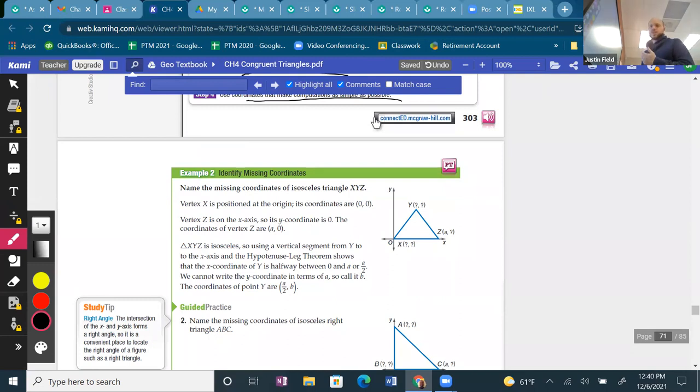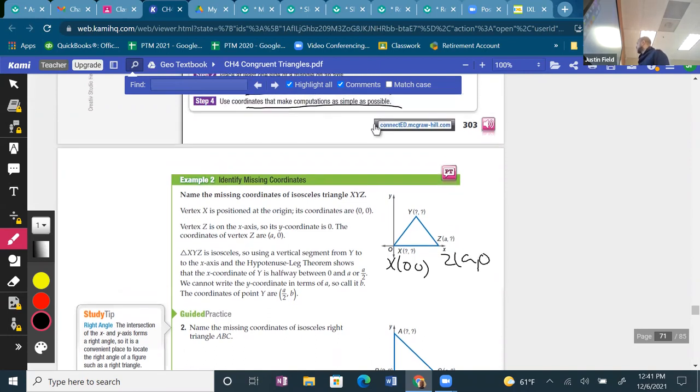Sometimes you may have missing coordinates. We can use relationships within the triangle. For example, if we have a midpoint or something else, then we can write an expression for a coordinate. X is (0,0), Z is on the axis, so that would be a zero. Y is a midpoint, and how do we know that? Because the triangle is isosceles. We skipped that section, but we're learning it now. In an isosceles triangle, the vertex is a midpoint between the two other vertices on the base. So that would be a over two and b - we don't know what the y value is, so we use another letter b.